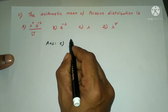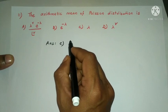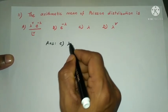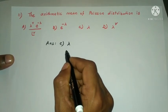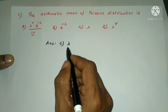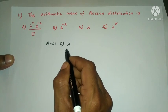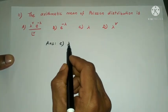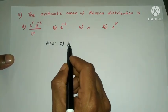The arithmetic mean of the Poisson distribution is lambda. Lambda is the one parameter of the Poisson distribution, and the variance is also equal to lambda.